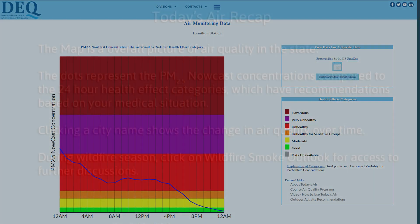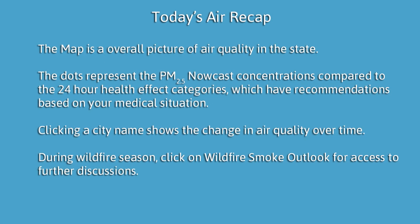To recap, the map can give you an overall picture of air quality in the state. The dot on the map represents NowCast concentrations compared to the 24-hour health effect categories, which have recommendations depending on your medical situation. Representations of health risk are provided as general advisories, and you should speak to your medical professional about any specific concerns. Be sure to click on your city to see how air quality has been changing over time. During wildfire season, further discussions are available by clicking Wildfire Smoke Outlook on the main page.